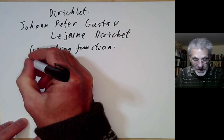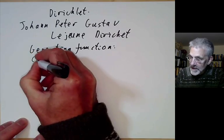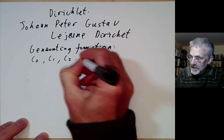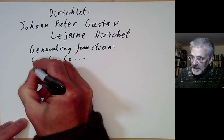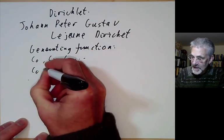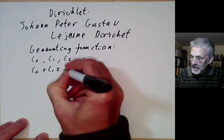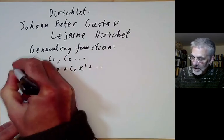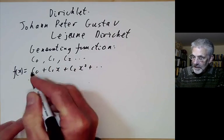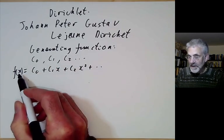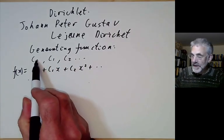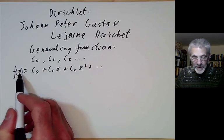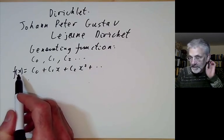So if we've got some sort of series of numbers c0, c1, c2, we can encode them as a power series: c0 plus c1·x plus c2·x² and so on. We write this as a function f(x), then try to convert properties of the sequence c_i into properties of the function f(x).